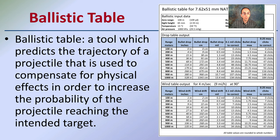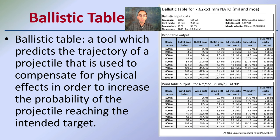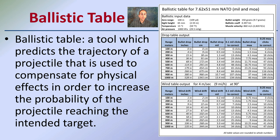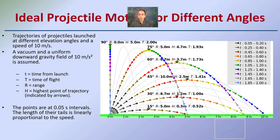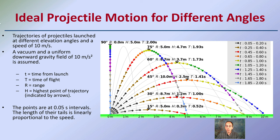A ballistics table is a tool which predicts the trajectory of a projectile and is used to compensate for physical effects in order to increase the probability of the projectile reaching the intended target. These are some basic tables for looking at the wind table and how that might impact things, a drop table depending on how far you're shooting, depending on velocity, temperature, air pressure, and muzzle velocity. Again, a lot of factors to take into consideration — I'm just going over the basics here.